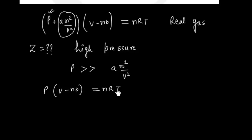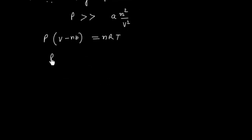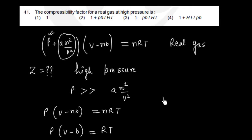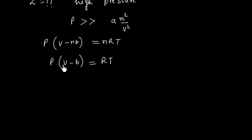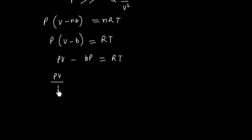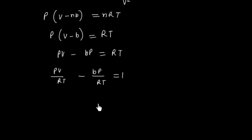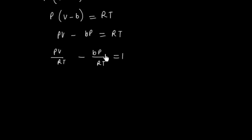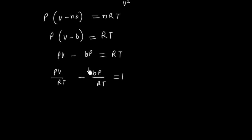For one mole of gas we write P(V − b) = RT, which expands to PV − Pb = RT. Dividing through by RT: PV/RT − Pb/RT = 1, and rearranging: PV/RT = 1 + Pb/RT.